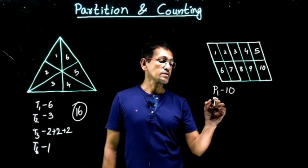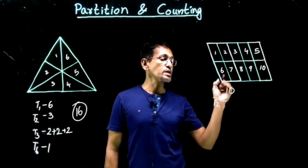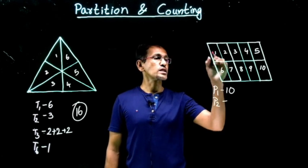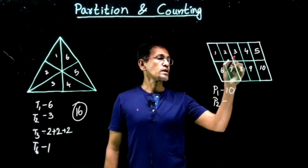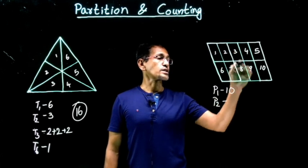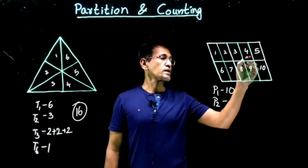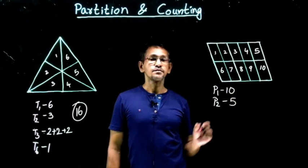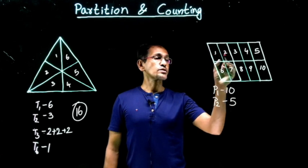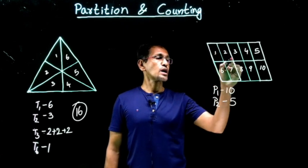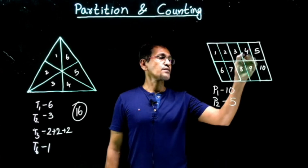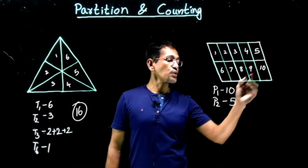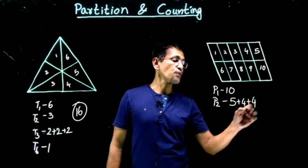P2 — two pieces at a time. Taking vertical pairs: one and six, two and seven, three and eight, four and nine, five and ten — five of them. How about horizontal pairs? One and two, two and three, three and four, four and five — four here and four on the other row. So four plus four is eight. P2 total: five plus eight equals thirteen.